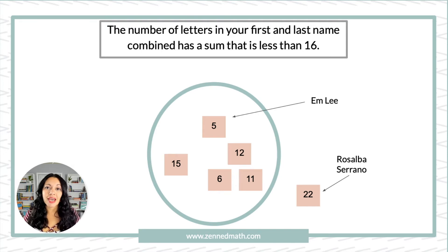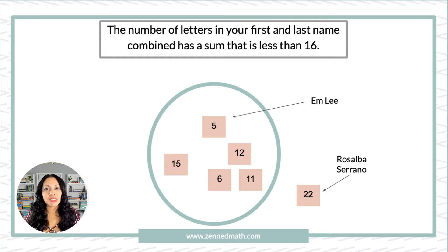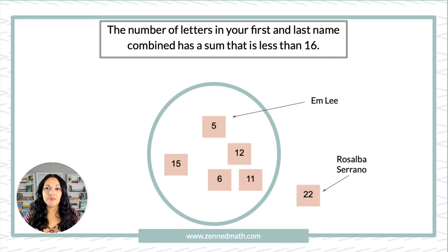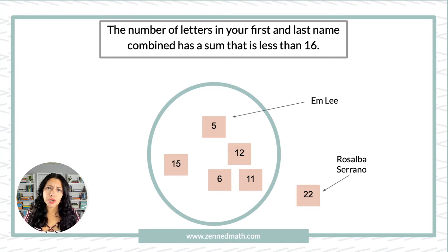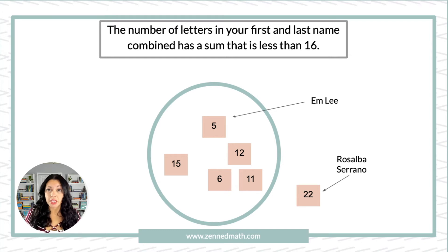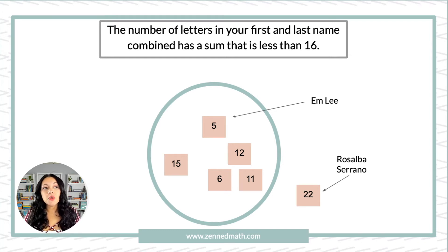They're interpreting the data. Another student may say, 'I noticed there's only one person with an extremely long name where the sum is 22.' You can ask, 'Why do you think 22 was placed outside of the loop?' and they would have to explain and justify. The questions can be extended — students can notice even numbers, odd numbers, prime numbers.